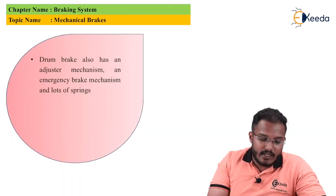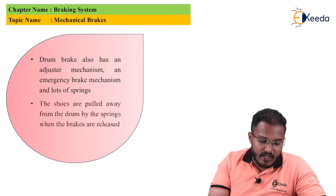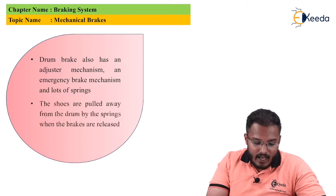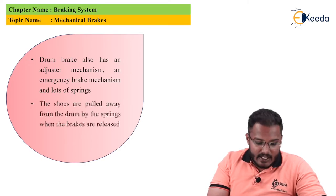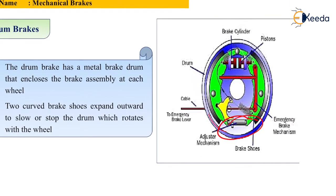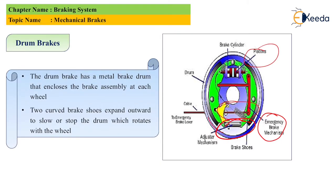Drum brake also has an adjuster mechanism, emergency brake system, and lots of springs. The shoes are pulled away from the drum by the springs when the brakes are released. This is the adjuster mechanism shown here, an emergency brake system is also there, and the pistons and springs are shown here.